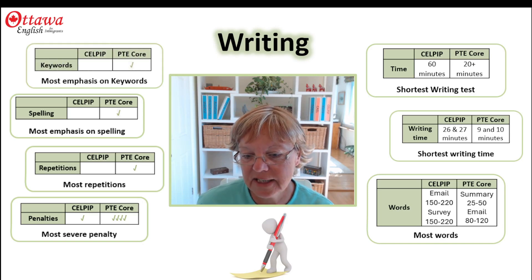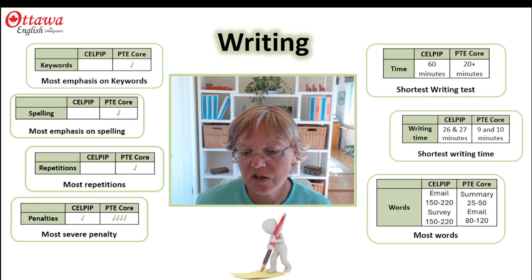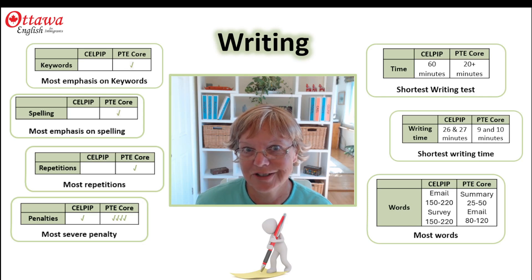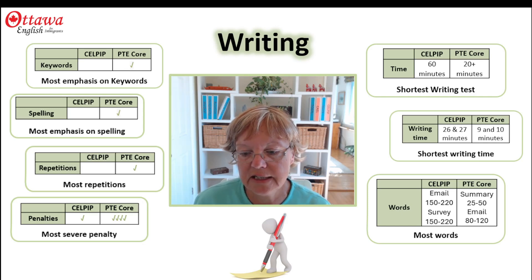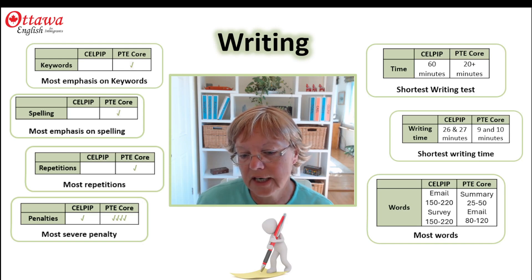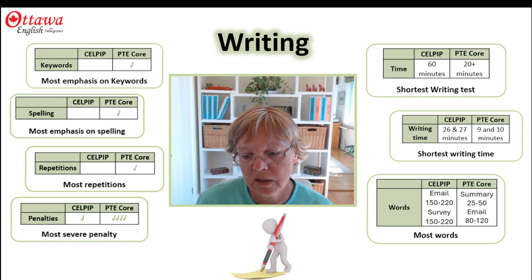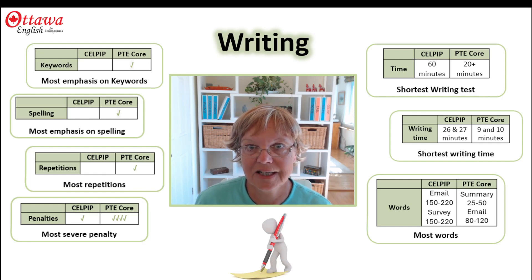Because PTE Core is checked by artificial intelligence, there's a lot more emphasis on keywords than there is in CELPIP, which is marked by a person. So overall my feeling is that getting a high score in CELPIP writing requires carefully developing your ideas with details, whereas PTE Core requires a lot more attention to the keywords and the spelling.